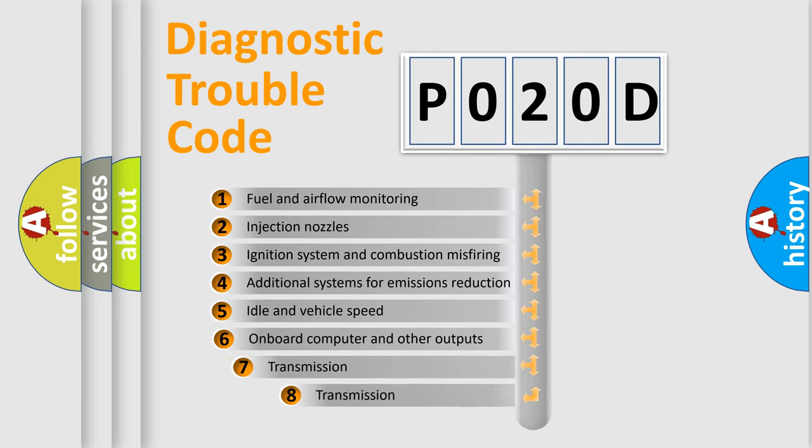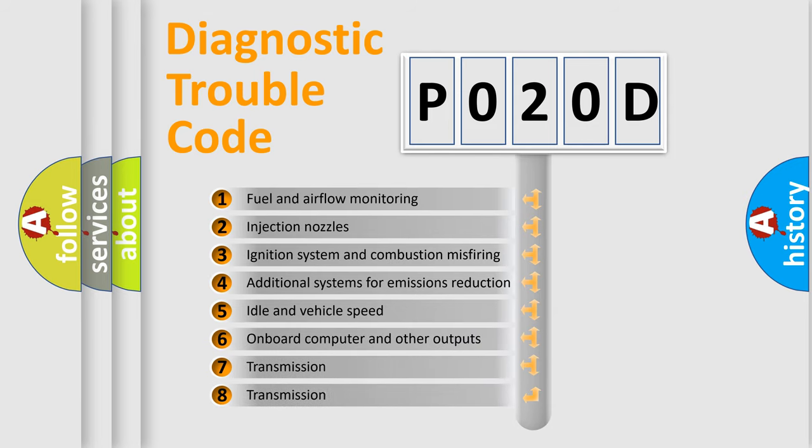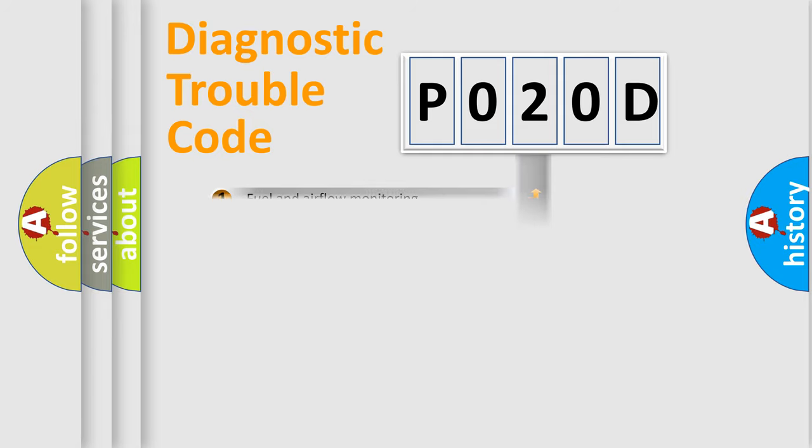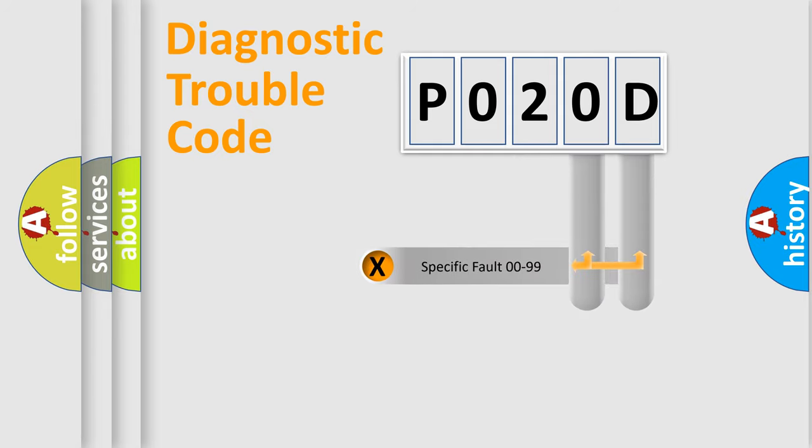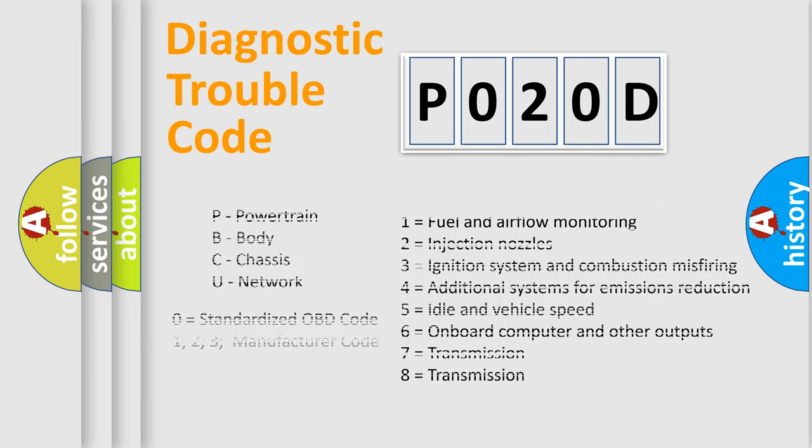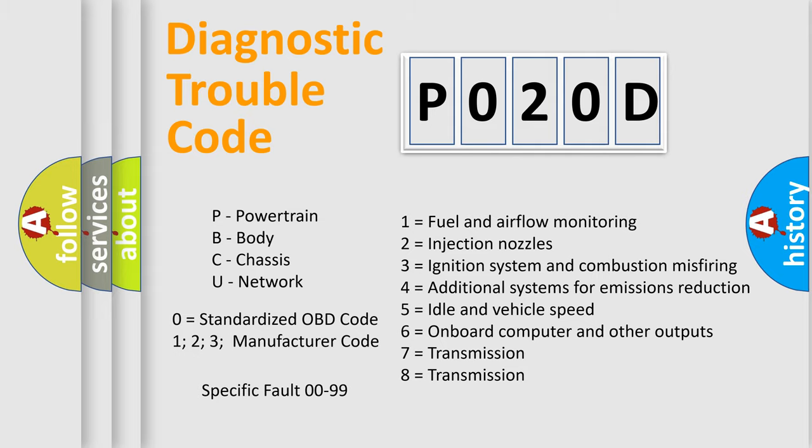The third character specifies a subset of errors. The distribution shown is valid only for the standardized DTC code. Only the last two characters define the specific fault of the group. Let's not forget that such a division is valid only if the second character code is expressed by the number zero.